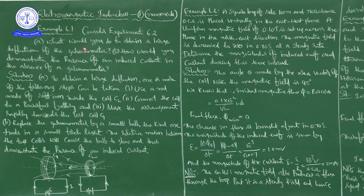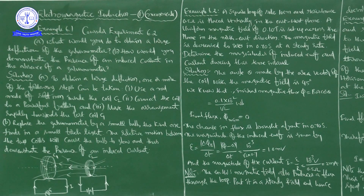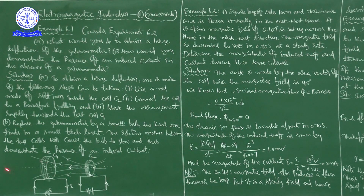Solution A: To obtain a large deflection, one or more of the following steps can be taken. First, use a rod made of soft iron inside the coil C2. Second, connect the coil to a powerful battery. Third, move the arrangement rapidly towards the test coil C1. With these three things, we can obtain a large deflection.